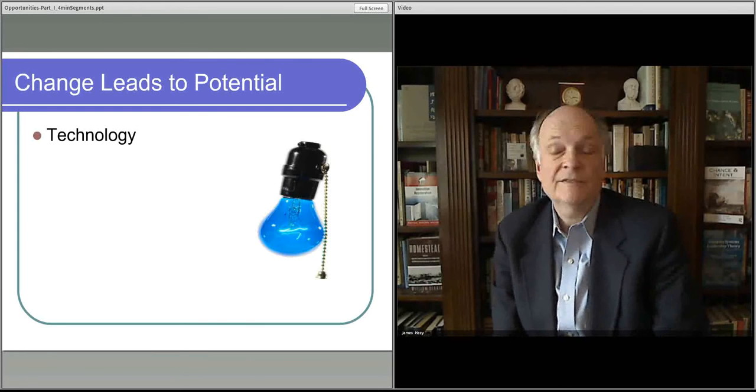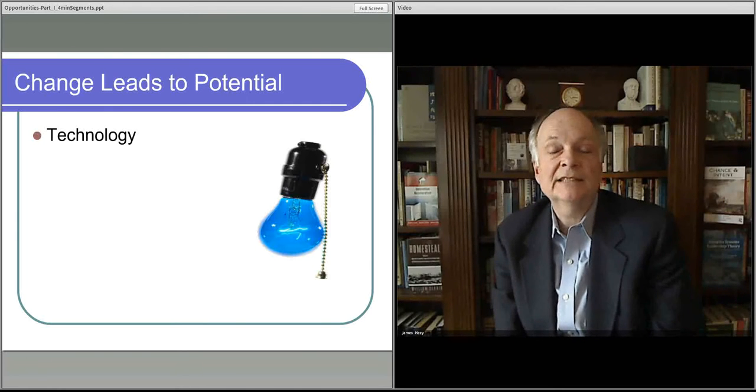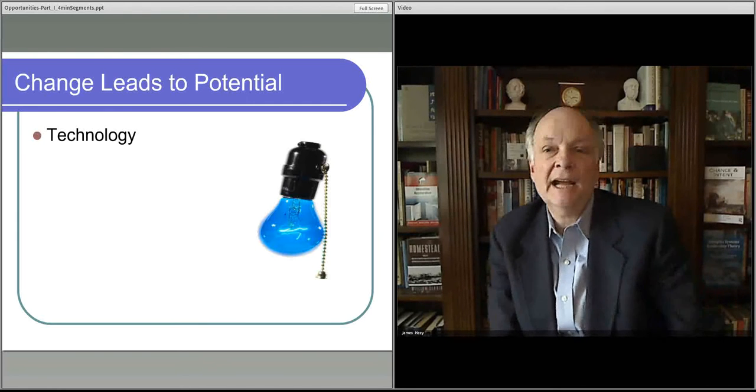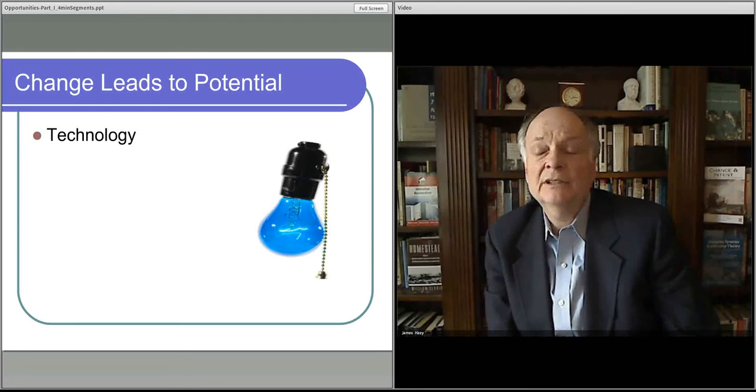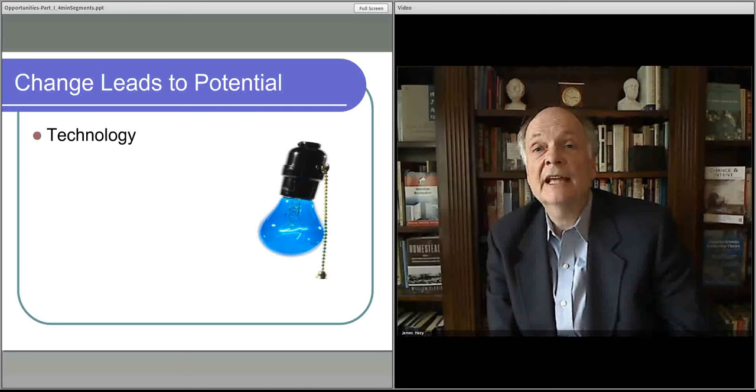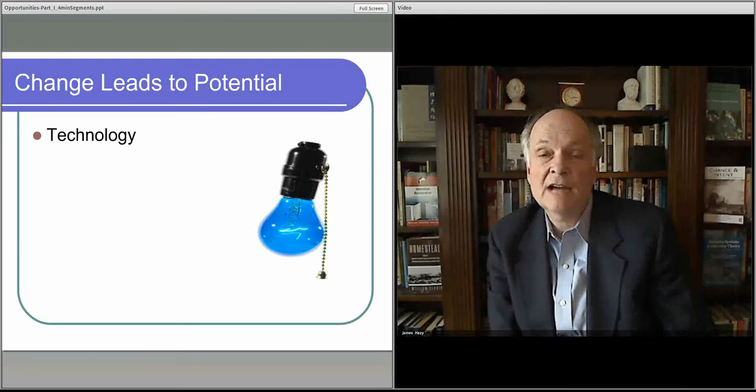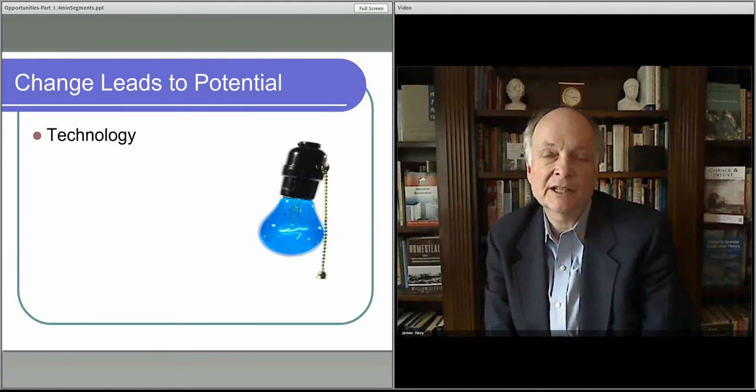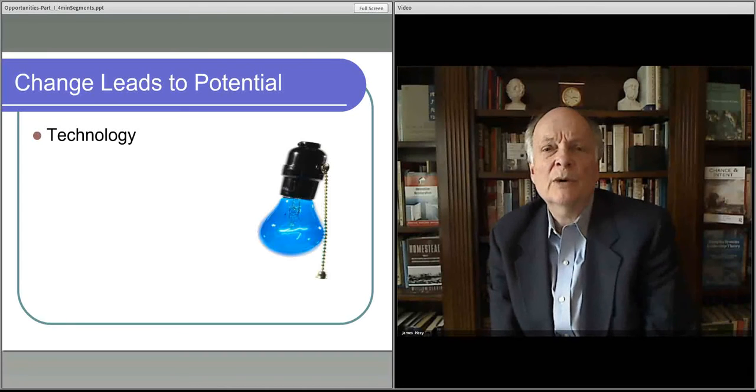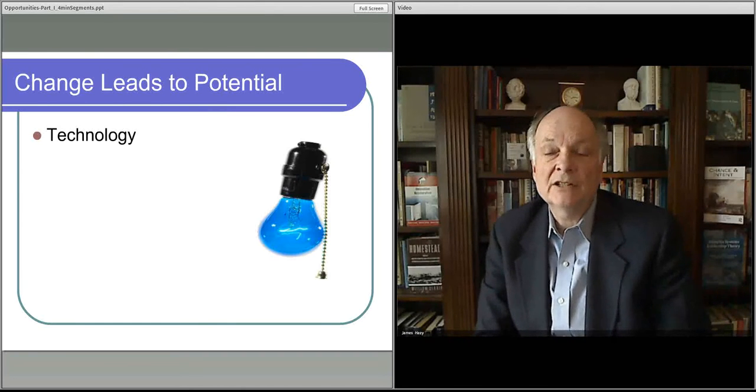Drones could be flying all over the place. You could send a message to your friend. Amazon is talking about delivering packages with drones. What does that mean in terms of another opportunity, a business opportunity associated with that? Maybe keeping track of drones or something that will detect drones around your house. Who knows what opportunities there are? But these are the idea of trends associated with technology.